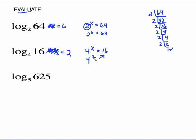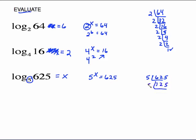Do you have to write the exponential form? No. You may be comfortable enough to just think: 5 to the what power gives me 625? If you can get the answer that way, you don't have to write it out. But for now we'll write it: put equals x, then 5 to the x equals 625. Dividing by 5 successively: 625, 125, 25, 5, 1 — that's 4 divisions. So log base 5 of 625 equals 4.